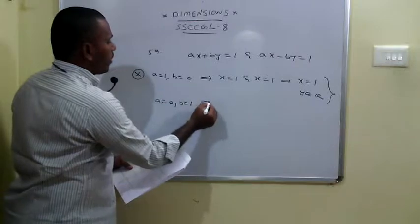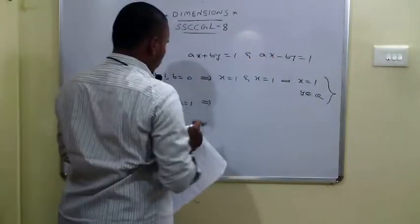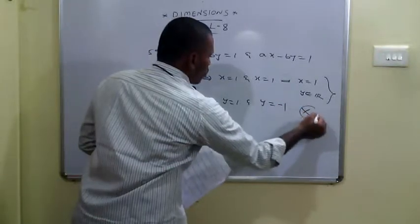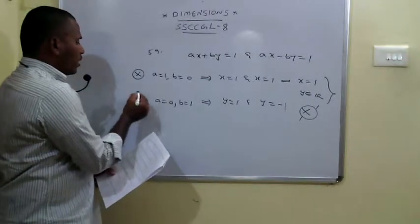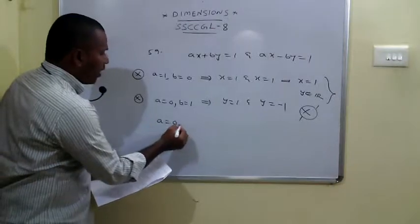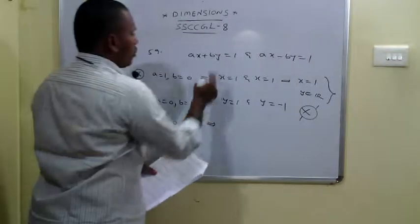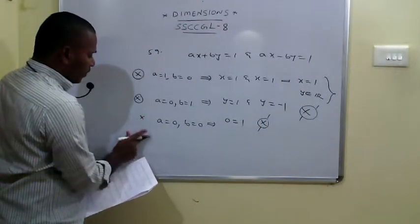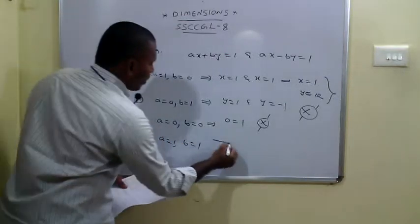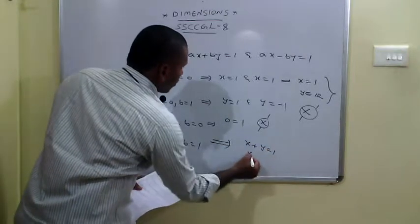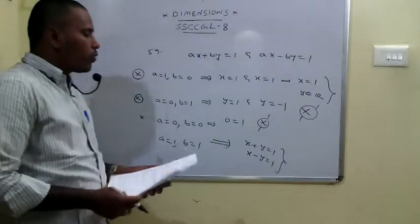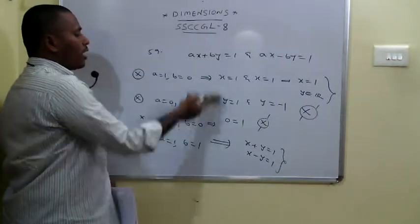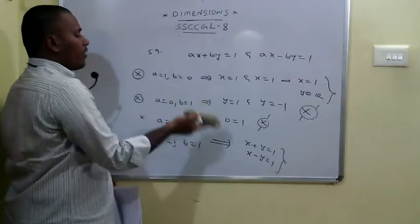For the fourth option, A equals 1 and B equals 1: the equations become X plus Y equals 1 and X minus Y equals 1. Solving these gives unique values of X and Y. So the answer is A equals 1, B equals 1. In summary: first case gives infinite solutions, middle two cases give no solution, and the last case gives a unique solution.